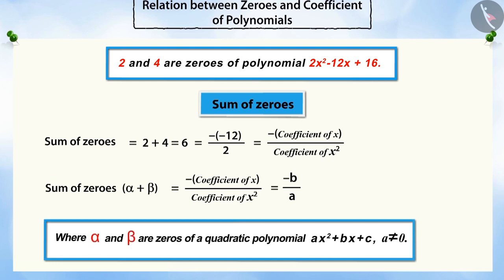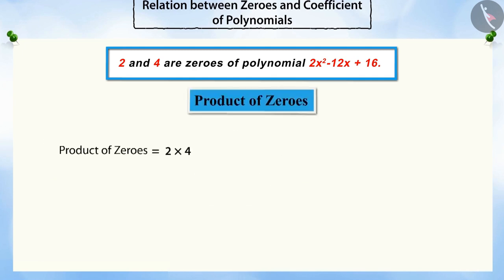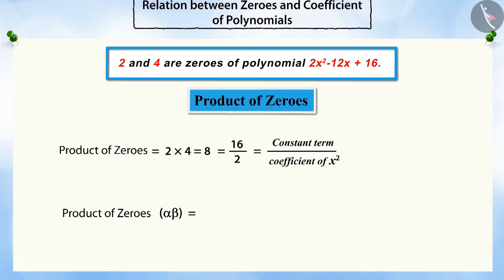Where alpha and beta are two zeros of a quadratic polynomial AX squared plus BX plus C. Similarly, if we multiply the zeros, you will see that the product of the zeros is equal to the ratio of the constant term to the coefficient of X squared of the quadratic polynomial.